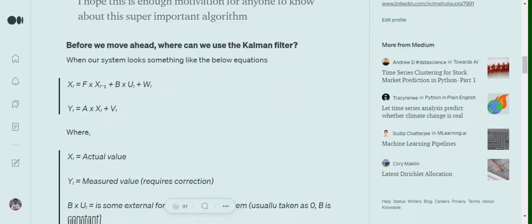The Kalman filter can be applied when our system satisfies the below two equations that I mentioned. That is X_t equals to F into X_{t-1} plus B into U_t plus W_t and Y_t equals to A into X_t plus V_t. Now let's understand what are these terms.